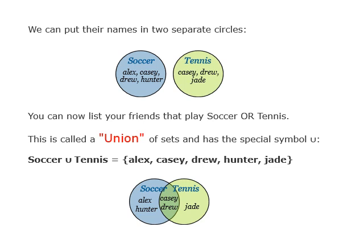If you combine all elements from both sets, that is called the union, symbolized by ∪. Soccer ∪ Tennis = {Alex, Cassie, Drew, Hunter, Jade}. In a Venn diagram, the union is represented by the entire area of both circles.